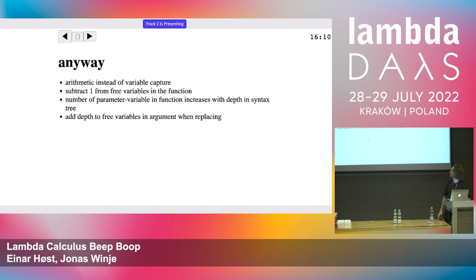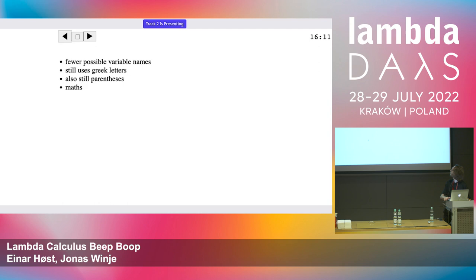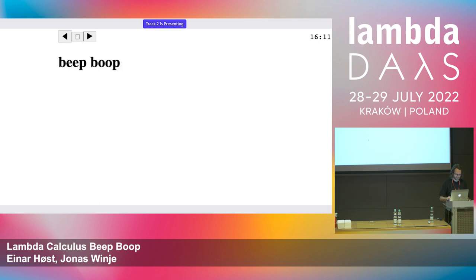You basically do some arithmetic instead of the variable capture thing. There's a pattern: three variables in the argument, and you increase the number as you move down the syntax tree before substituting them. There are fewer possible variable names — still infinitely many, but countably infinite rather than, you know, a smaller infinite. You still have the same parenthesis problem, as we saw in both plus and multiplication, so I still can't really shout it at you effectively.